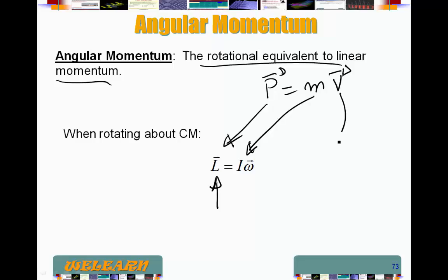And instead of V, we use the rotational equivalent, rotational velocity, omega. So when an object is rotating about its center of mass, the angular momentum of that object is I times omega. I relative to the center of mass times omega.